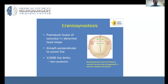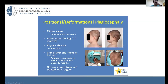In coronal synostosis, growth occurs perpendicular to the open suture lines. With the coronal suture fused, you're not getting growth up-down; instead growth occurs only left-right. This gives rise to the descriptive term brachycephaly — a widened head.